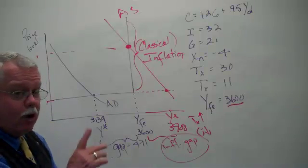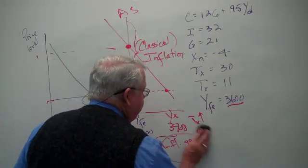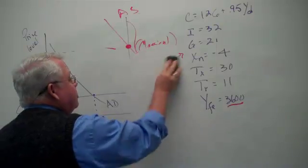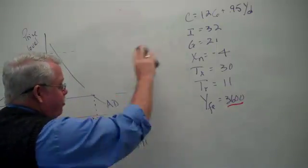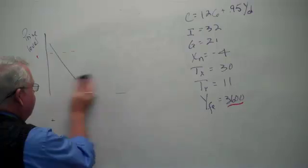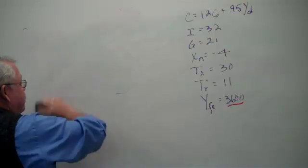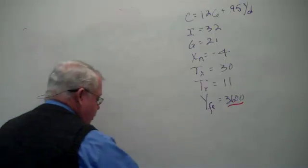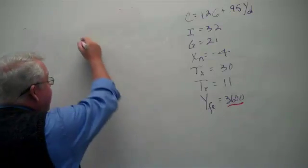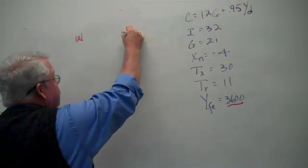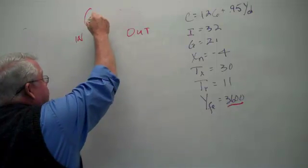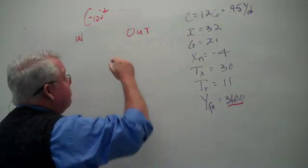Now, the last part we want to do with this model talks about the government's budget, the way it's indicated here. Now, what do we mean by budget? When we talk about anybody's budget, we're talking about how much money comes in, how much money goes out. When we're talking about the government's budget, and here I mean the federal government,